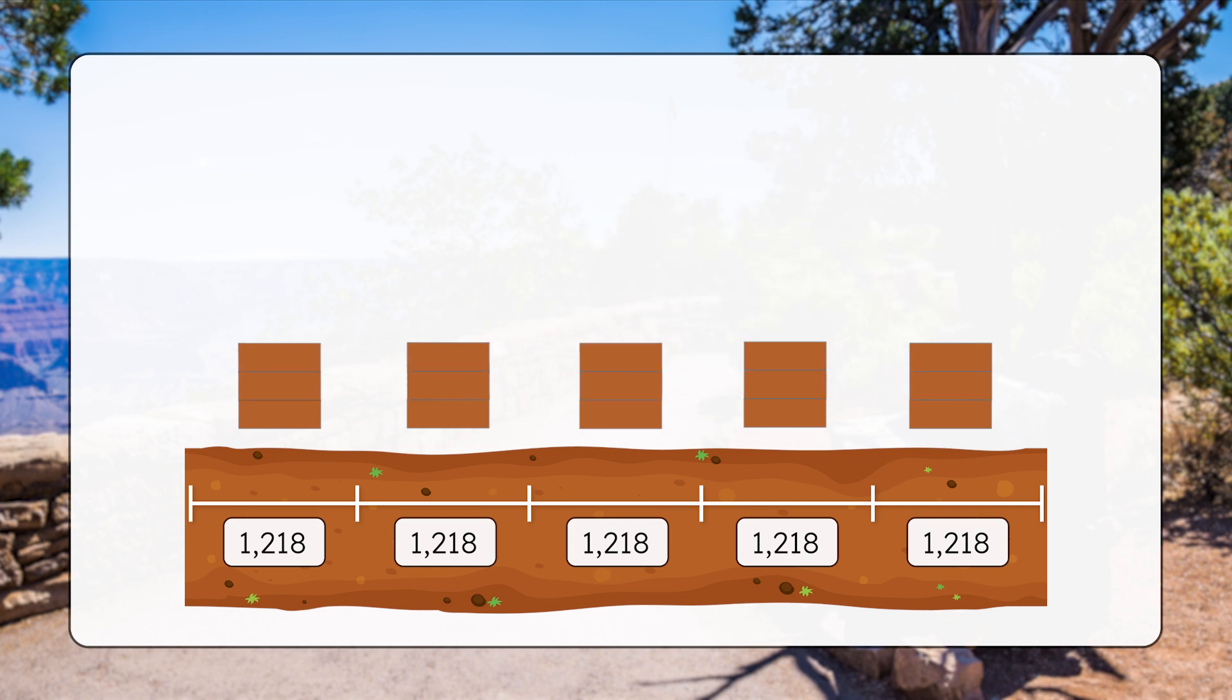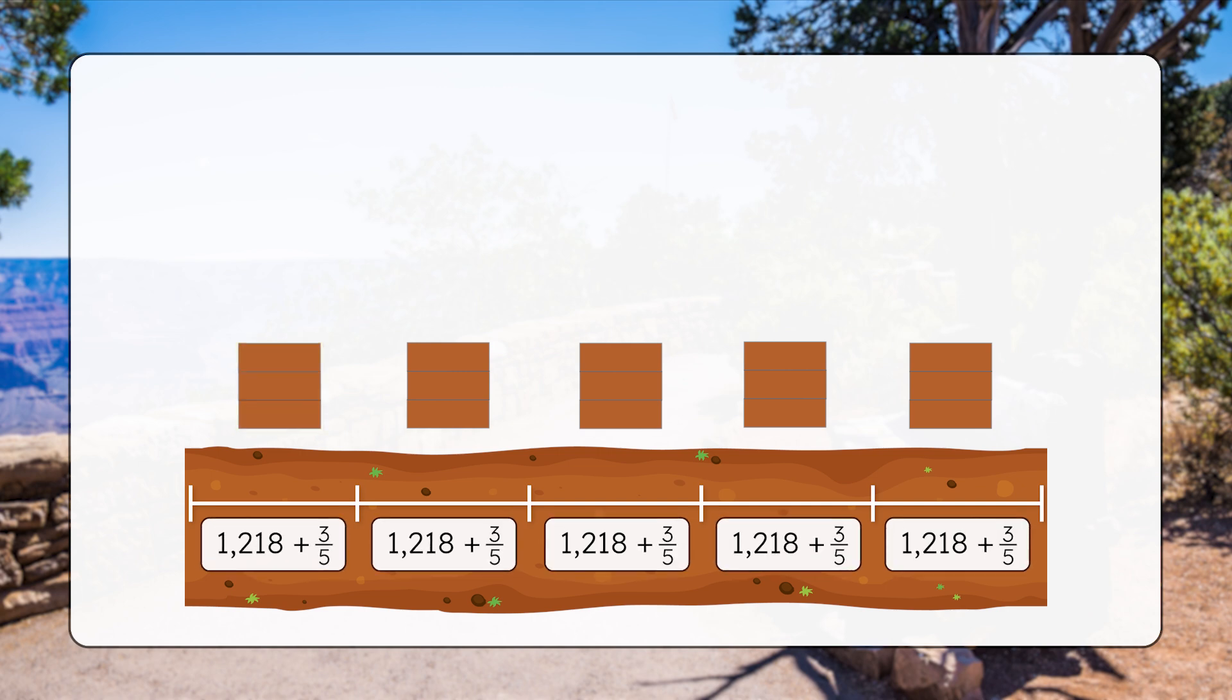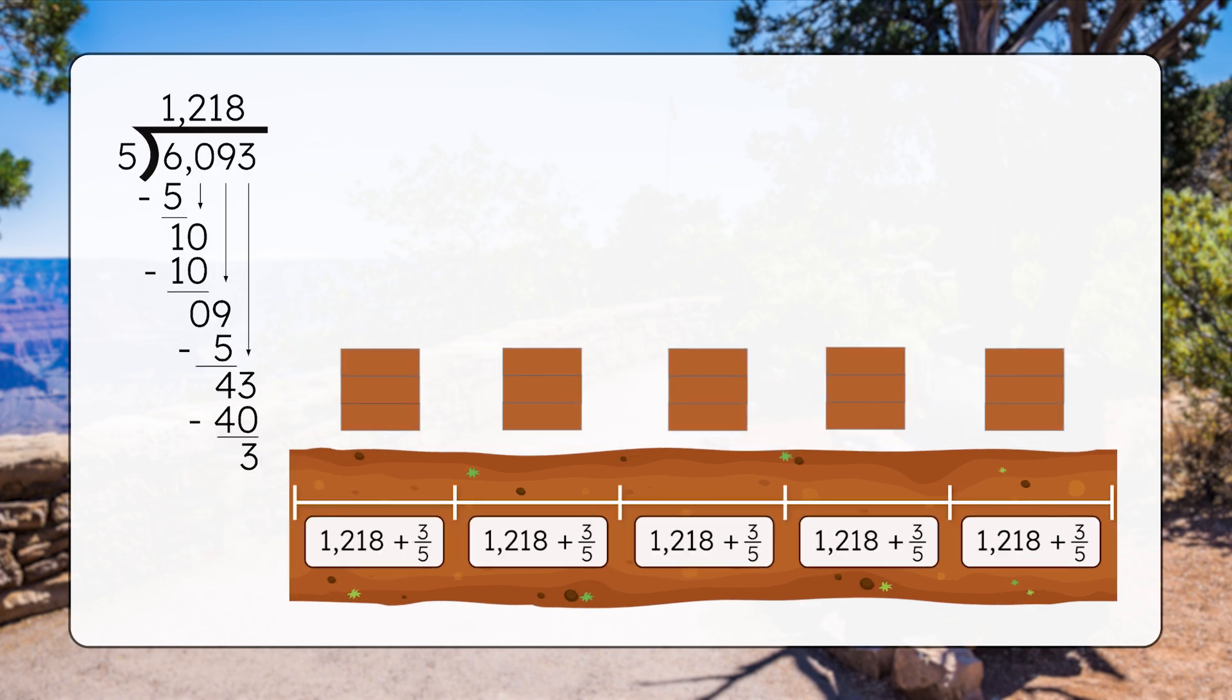Now, each section of the hike has one, two, three fifths of a foot, in addition to the 1,218 whole feet that we'll hike. By writing the remainder as a fraction, we're sharing those three extra feet equally across all five sections. This means that we'll hike a total of 1,218 and three fifths feet in each of the five sections of our hike.